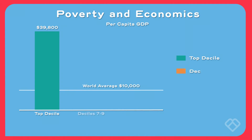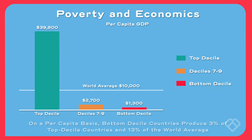In deciles seven through nine it's about $2,700, and in the bottom decile it's only $1,300. So the per capita GDP in the bottom decile is a tiny fraction of that in wealthier countries.